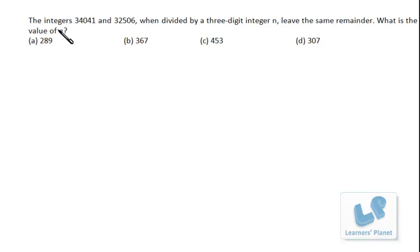Now let's try this problem: The integers 34041 and 32506, when divided by a three-digit integer n, leave the same remainder. What is the value of n? Before we do this problem, let me take some smaller examples so you'll be able to understand the concept we're going to use.